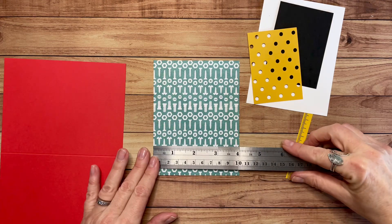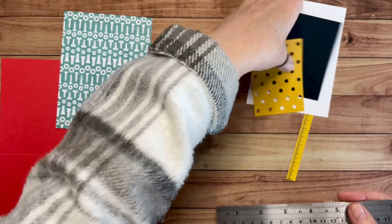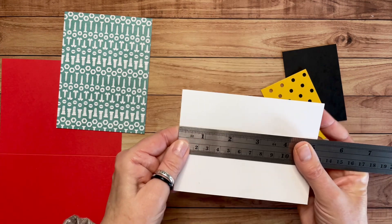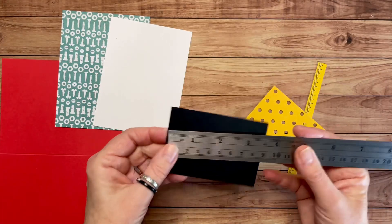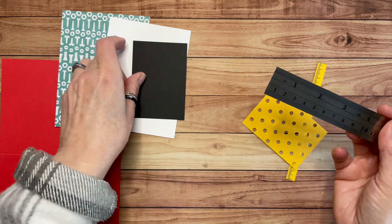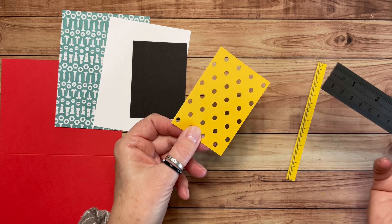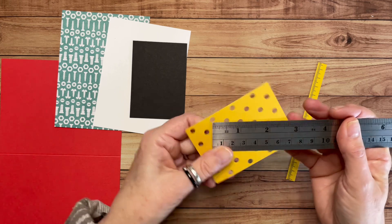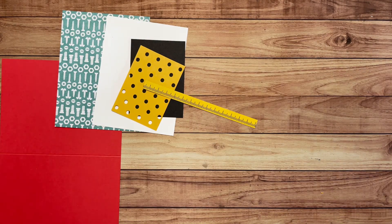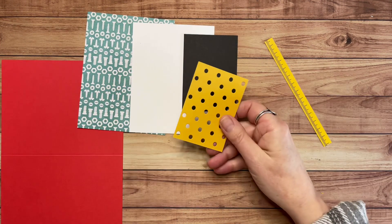This piece of Designer Series paper is four inches by five and a quarter. This piece is basic white, three and three quarters by five. I've got a piece of basic black, two and a half by three and a half, and then this piece of Crushed Curry. I'm going to show you what I did to get these little circles punched out, but the piece of cardstock itself is two and a quarter by three and a quarter. Then this is just a strip of the Designer Series paper from that pack, so this card will come together really quickly.